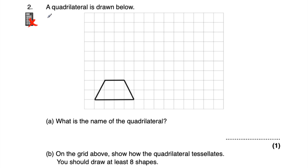Question number two says a quadrilateral is drawn below. As you can see, there's a quadrilateral on this grid. Part A says: what is the name of the quadrilateral? This quadrilateral is a trapezium. It's got one pair of parallel lines - the top is parallel to the bottom and we've got no other pairs of parallel lines. So this is a trapezium.